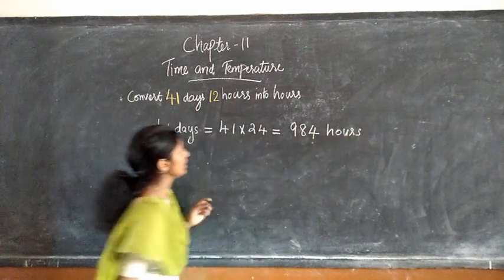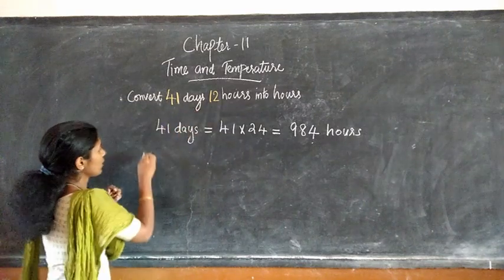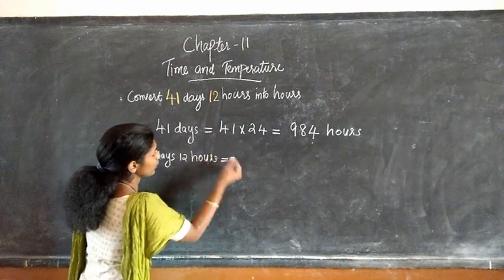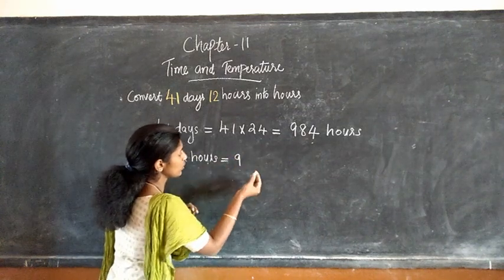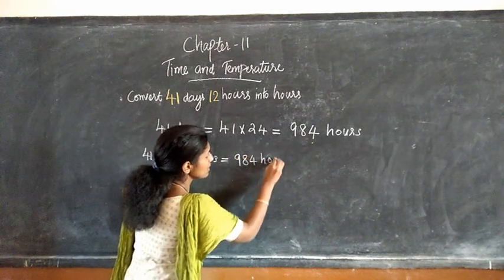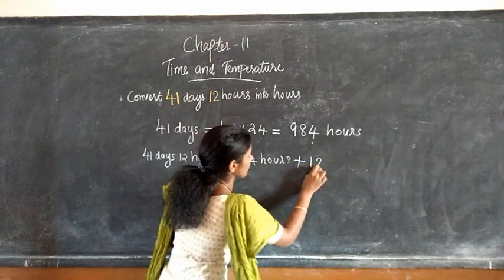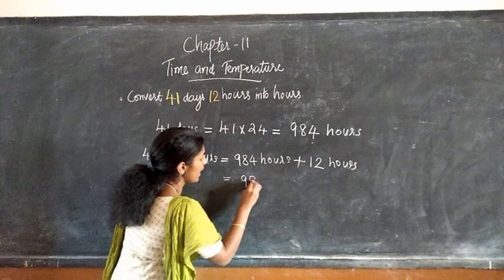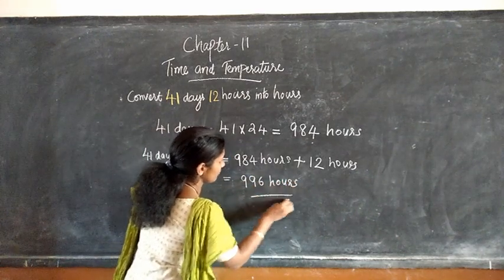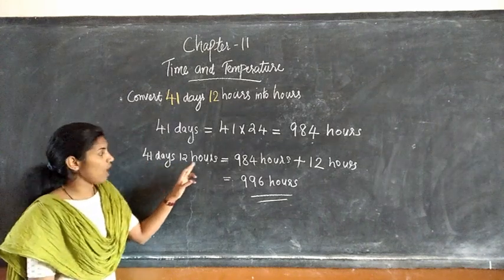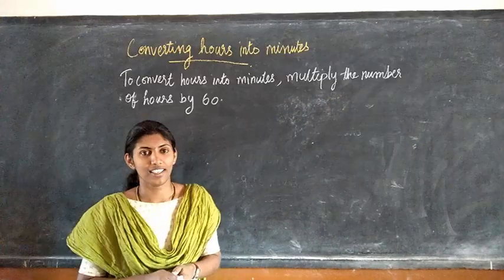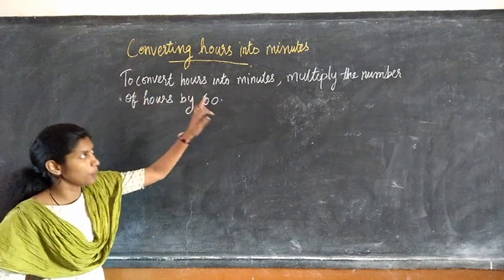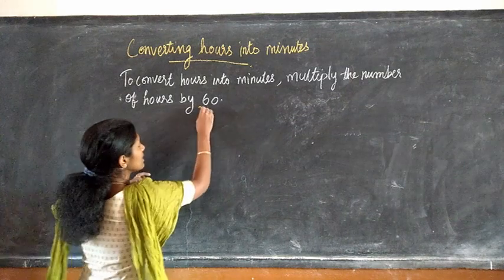Next question: convert 41 days 12 hours into hours. First, we have to convert 41 days into hours. 41 days equal to 41 into 24. When we multiply these two numbers, we will get 984 hours. Then we have to convert 41 days 12 hours. So 41 days 12 hours equal to 984 hours plus 12 hours. When we add this number, we will get 996 hours.